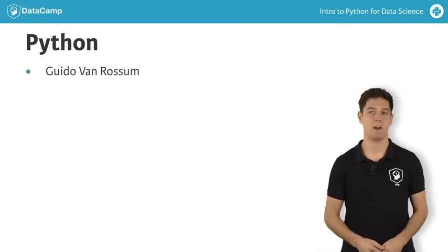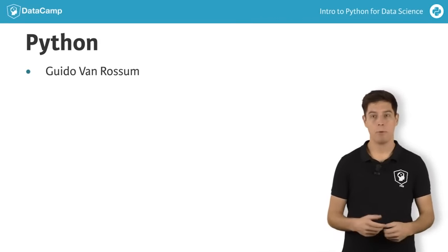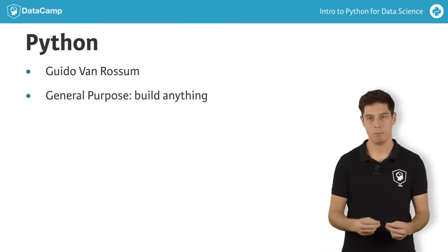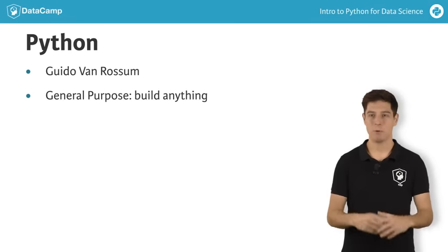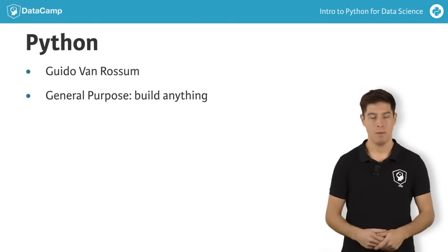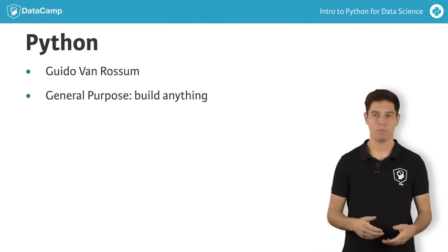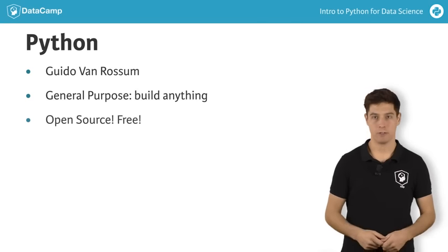Python was conceived by Guido van Rossum. What started as a hobby project soon became a general-purpose programming language. Nowadays, you can use Python to build practically any piece of software. But how did this happen? Well, first of all, Python is open source. It's free to use.